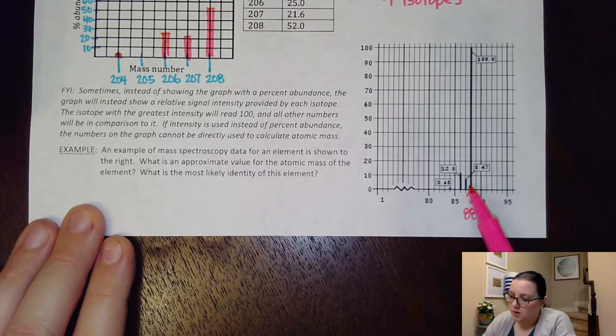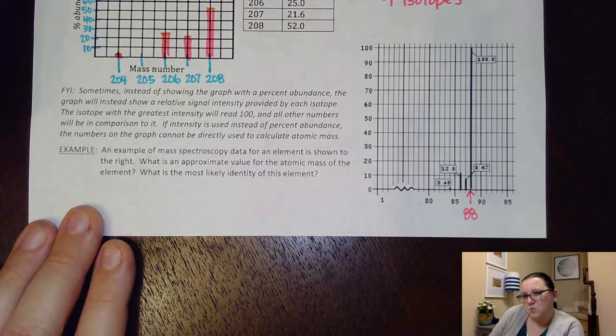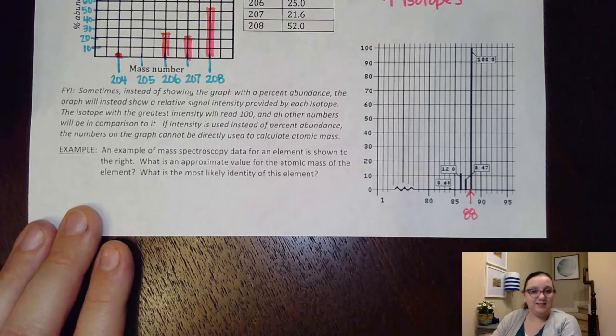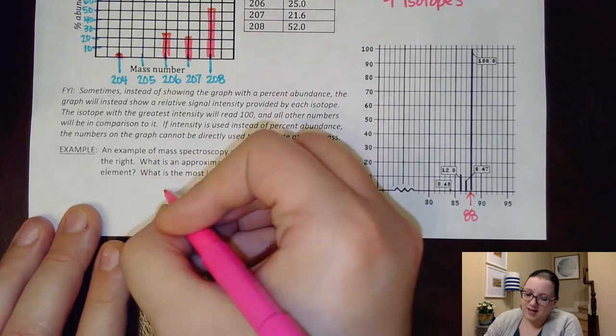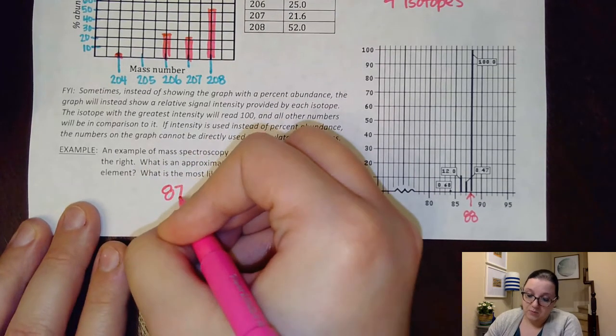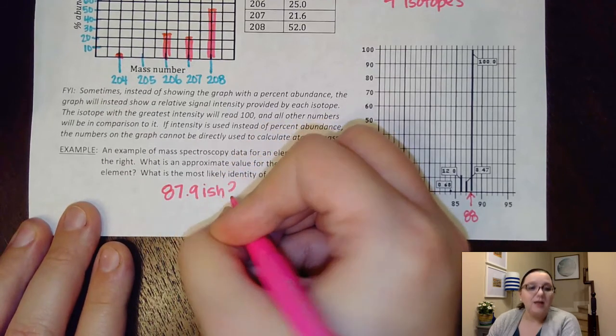However, since I have the couple of peaks that are lower than that, I'm going to guess that my value is somewhere really close to 88 but a little bit below because, again, these have to all average together to give me that average atomic mass. So I would guess maybe like 87.9-ish, you know, somewhere maybe in that ballpark.